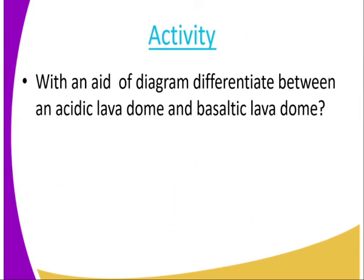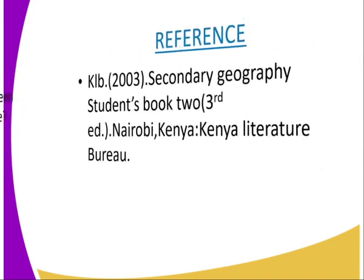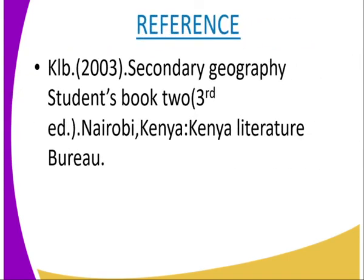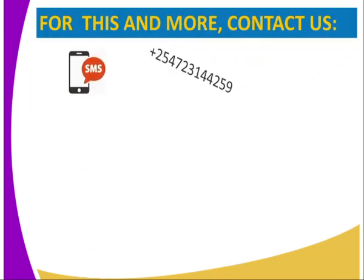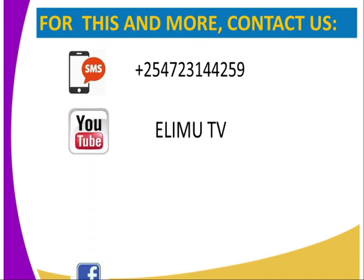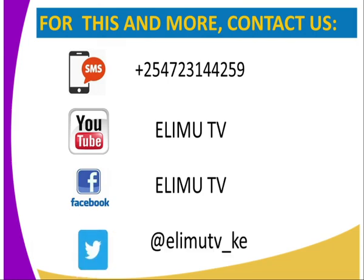Activity for today: with the aid of a diagram, differentiate between an acidic lava dome and a basaltic lava dome volcano. For more information, you can visit the KRB 2003 Secondary Geography Student Book 2, third edition. You can also get us through SMS, YouTube, or Facebook.